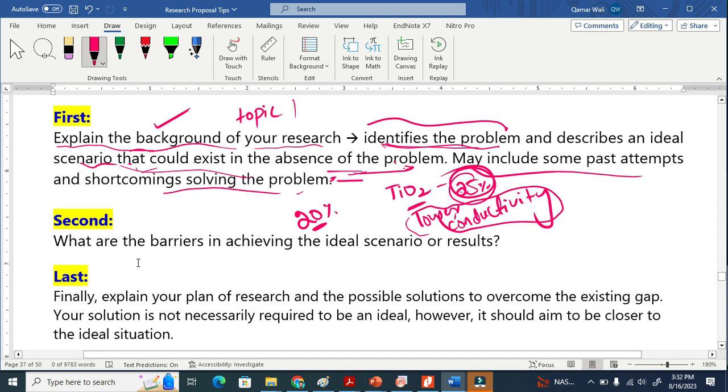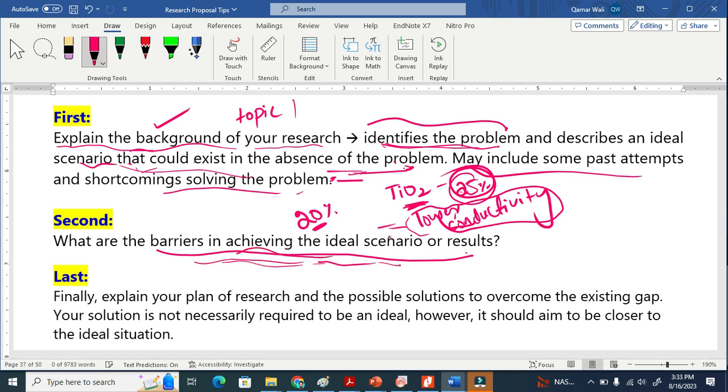The second point is basically, what are the barriers in achieving the ideal scenario. As I explained, the barrier, you tell that lower conductivity of Titania. It is basically the lower conductivity is the barrier which is not achieving the ideal scenario.